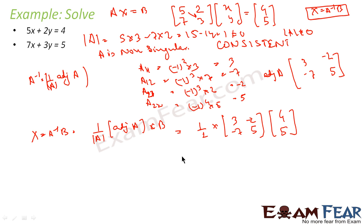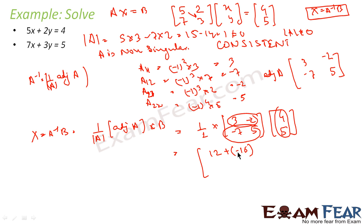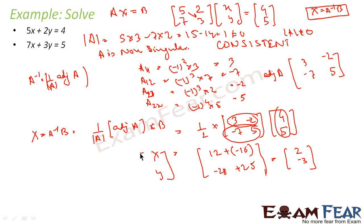Now multiply: take the horizontal row and column. First element: 3 into 4 is 12, minus 2 into 5 is minus 10, giving 2. Second element: minus 7 into 4 is minus 28, plus 5 into 5 is 25, giving minus 3. So X = [2, minus 3]. Comparing with the X matrix [x, y], we get x = 2 and y = minus 3, and that is my answer.